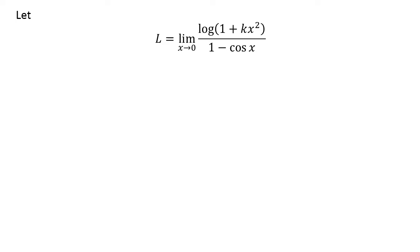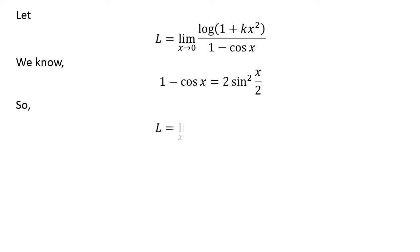Let l be equal to the limit of natural log of 1 plus k times square of x upon 1 minus cosine of x as x approaches 0. We know 1 minus cosine of x is equal to 2 times square of sine of half of x. The video appearing at the upper right corner verifies this identity, and the link is also given in the description. After application of this identity, l is equal to the limit of natural log of 1 plus k times square of x upon 2 times square of sine of half of x as x approaches 0.